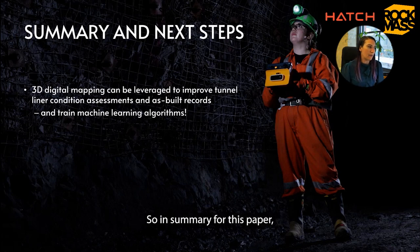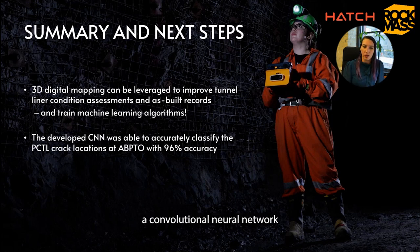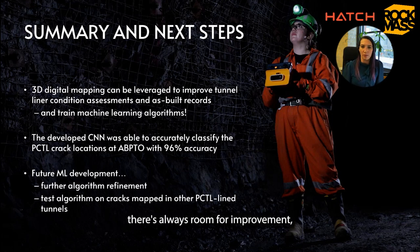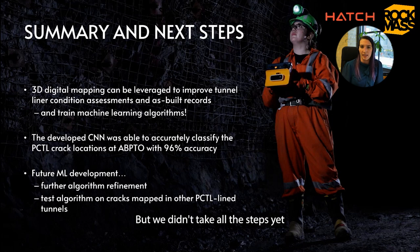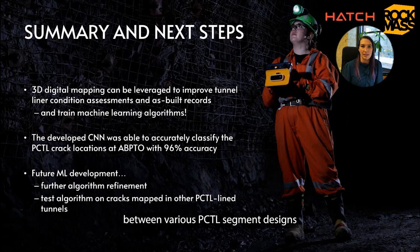In summary, we found that 3D digital mapping can be leveraged to improve tunnel lining condition assessments and as-built records, and it can be used to train machine learning algorithms relatively simply because data is already captured digitally. We developed a convolutional neural network that, after a few refinement steps, achieved a global accuracy of 96%. Future work could further improve crack identification accuracy beyond the current ~60%, and the algorithm developed specifically for the Ashford's Bay project could potentially be tested at different PCTL sites given the limited variation between segment designs.